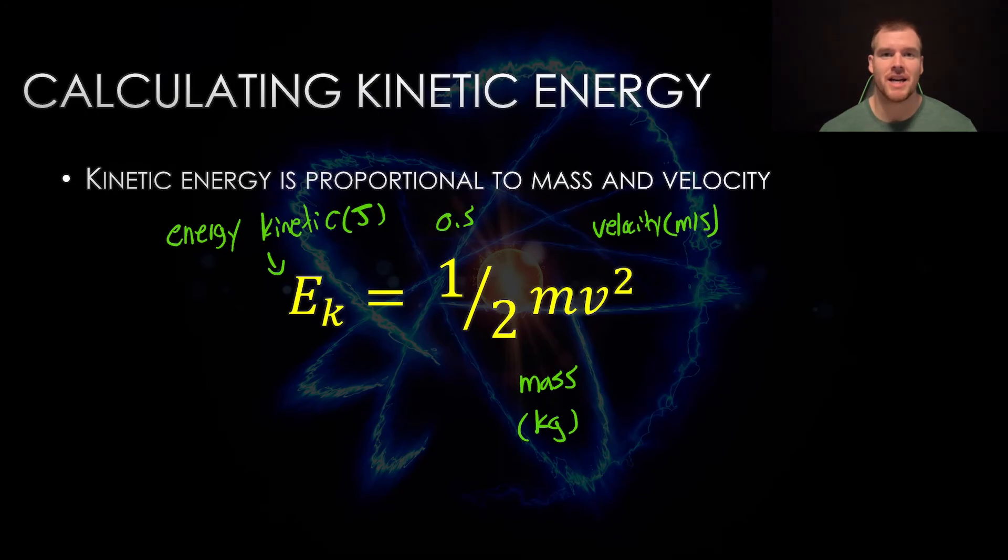A joule is basically just a summary of different units. When we look at this equation, half times M times V squared, the units are kilograms times meters per second times meters per second, which is meters squared per second squared. So it's kilograms meters squared per second squared. Instead of writing that every time, we just said that's going to be equal to a joule.